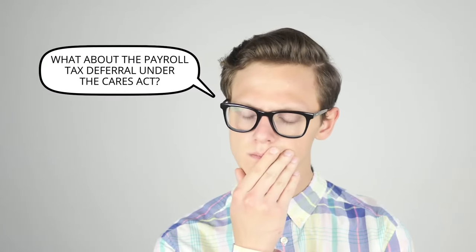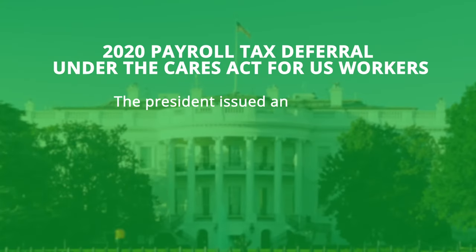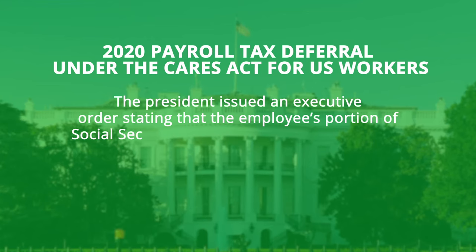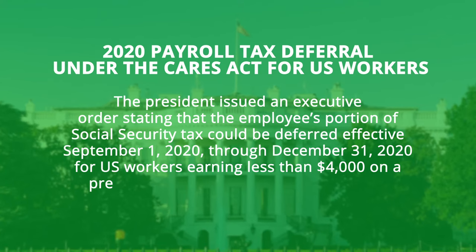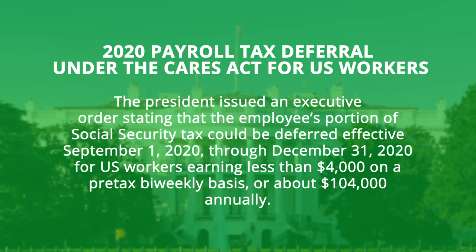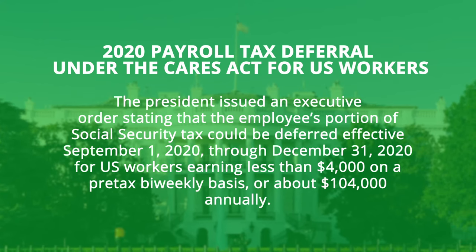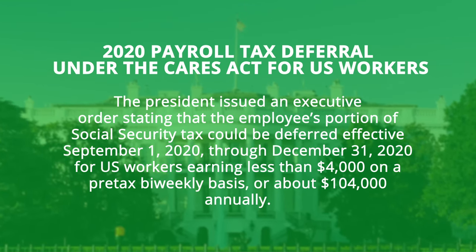What about the payroll tax deferral under the CARES Act? On August 8, 2020, the president issued an executive order stating that the employee's portion of Social Security tax could be deferred effective September 1, 2020 through December 31, 2020, for U.S. workers earning less than $4,000 on a pre-tax bi-weekly basis, or $104,000 annually. This was enacted to help Americans see a near-term bump in their paychecks, but those Social Security taxes will need to be repaid between January 1, 2021 and April 30, 2021, if no extension is granted.